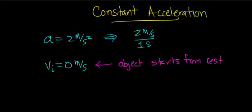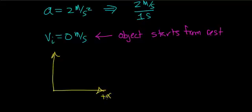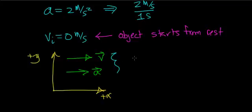Let's make one more assumption: the object's velocity will increase in the x direction. So if this is my xy coordinate system, the object's velocity and acceleration will both be in the x direction. The reason I'm making this assumption is that whenever the velocity and acceleration are in the same direction, the object will be speeding up.